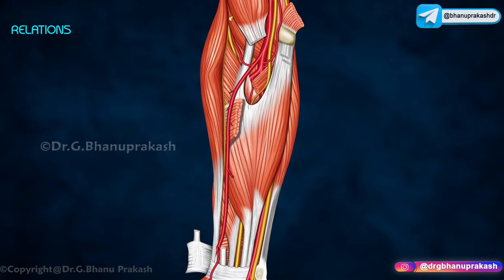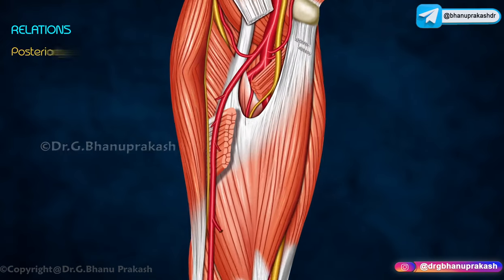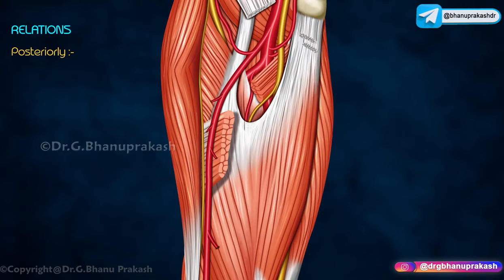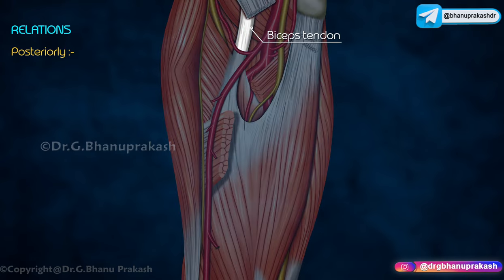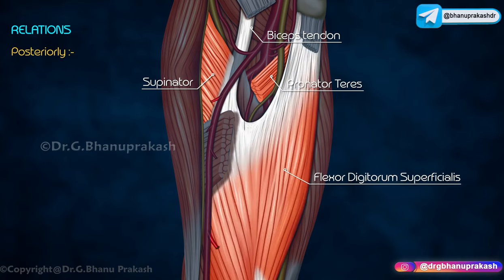Relations. Anteriorly, the upper part is overlapped by the brachioradialis and the lower part by skin and superficial fascia. Posteriorly it is related from above downwards to the biceps tendon, supinator, pronator teres, and flexor digitorum superficialis.